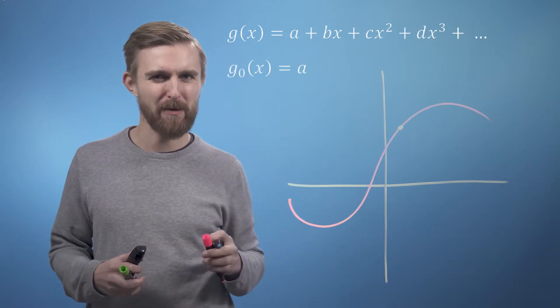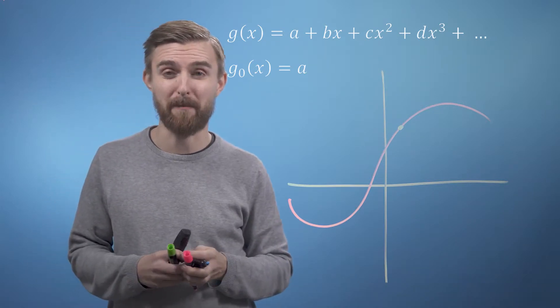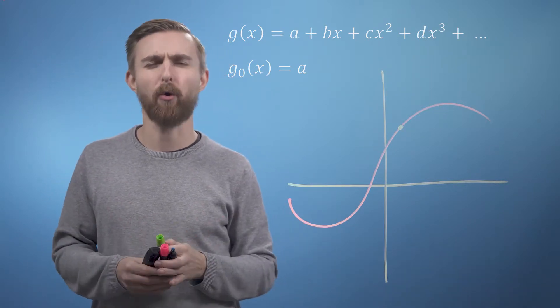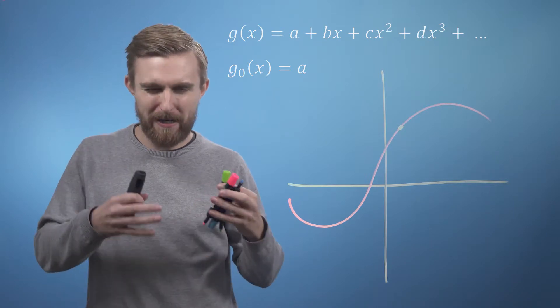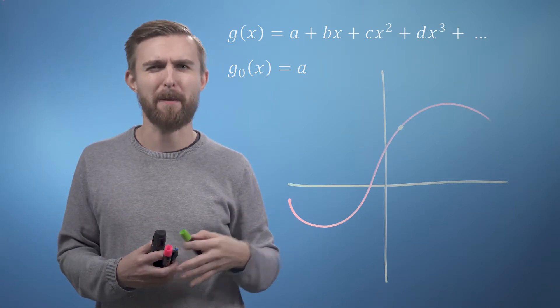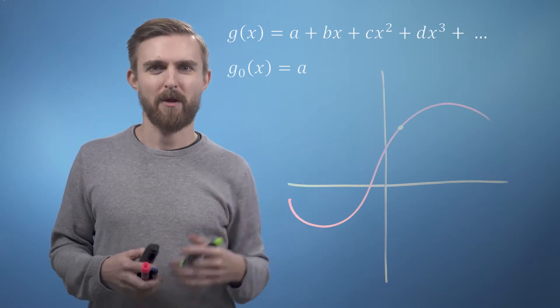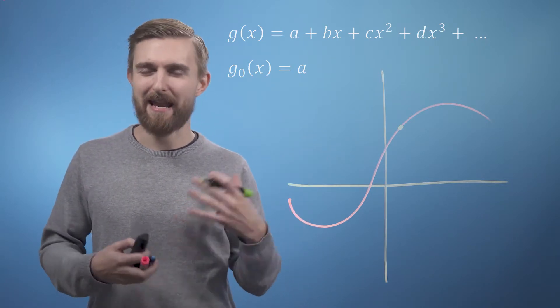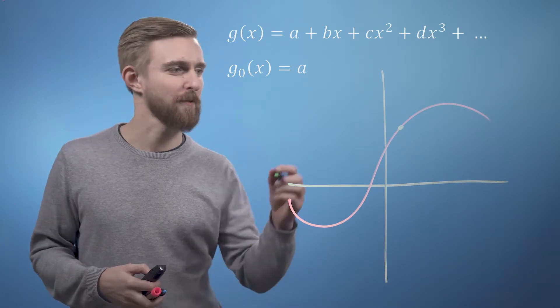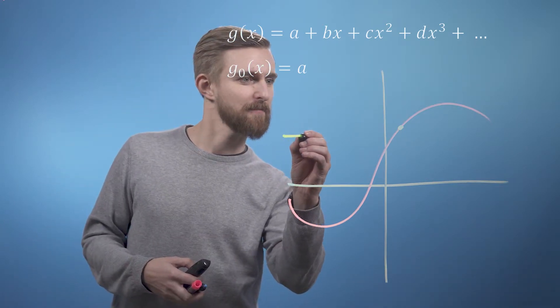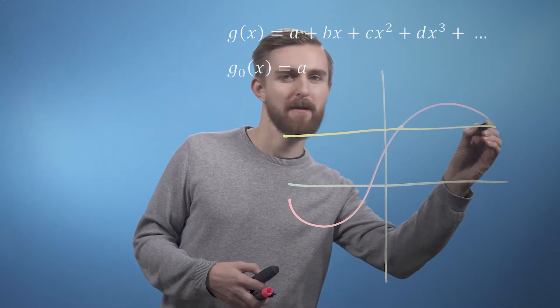So as the first term of our generalized power series is just a number, a, and we're ignoring all the other terms for now, we know that our opening approximation must just be a number that goes through the same point. So we can just dive straight in and add our zeroth order approximation function to our plot. It's going to be something like that.